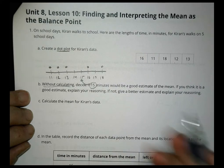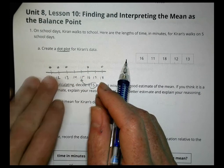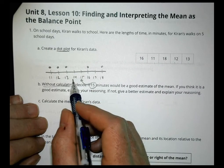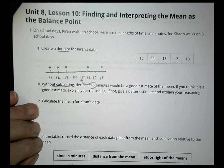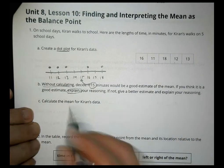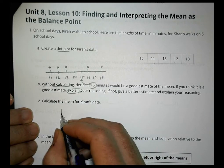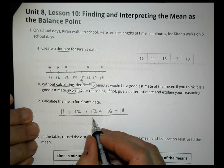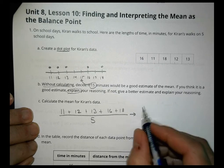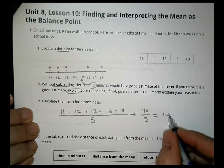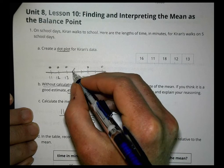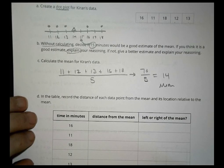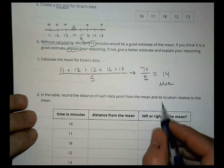I might say 15 is a little too high, because there are three values on the lower side and two on the higher. Maybe 14 is a more reasonable estimate. Let's calculate: 11 plus 12 plus 13 plus 16 plus 18 equals 70, divided by 5 equals 14. So the actual mean is 14 — and yes, 15 was a little too high. We can mark the mean with a triangle at 14.